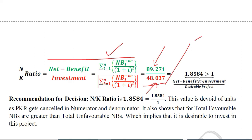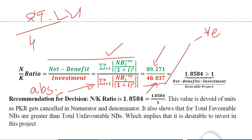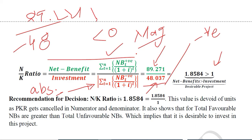The negative value in the denominator is omitted by using an absolute sign in the formula. If we do not use the absolute sign to remove the negative sign, the answer will always be less than zero, and all projects would appear undesirable. We are concerned with the magnitude of the two values — which one is greater regardless of sign — so we neutralize the negative sign and take the ratio.